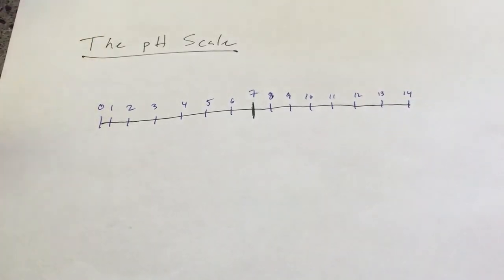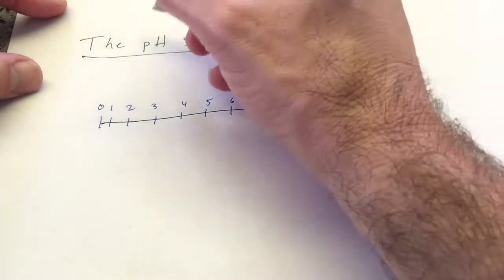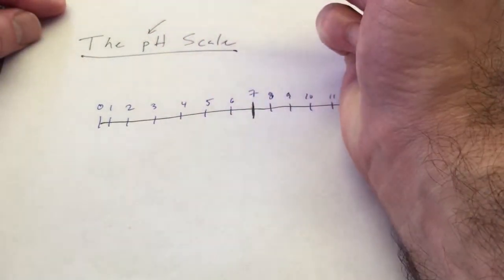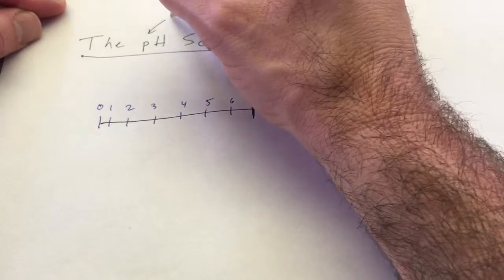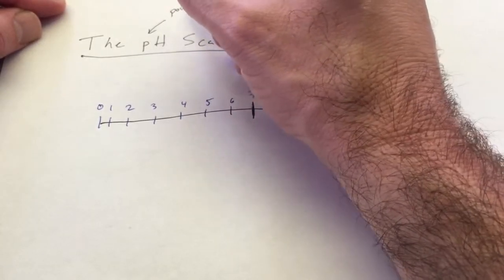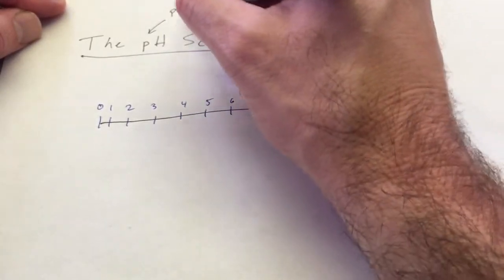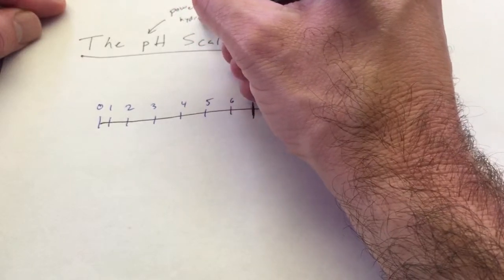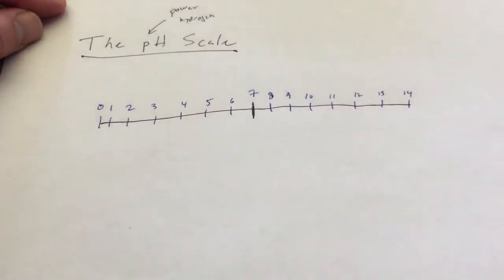So the pH scale, what the word pH really stands for, it comes from the French. And it literally means, translated, power of hydrogen.